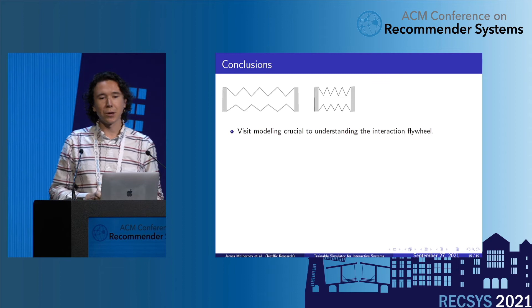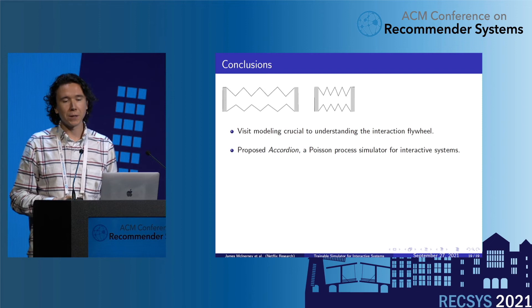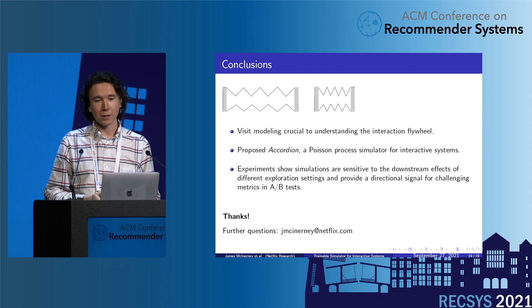In summary: visit modeling is crucial to understanding the interaction flywheel. We proposed Accordion, a Poisson process simulator of interactive systems. Experiments show that simulations are sensitive to downstream effects for different exploration settings and could be helpful in offline A/B tests. Thanks very much for listening — we're open to questions.